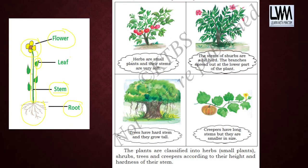Herbs are small plants. If you see this, it is a tomato plant — a tomato plant is a herb. The stems of herbs are very soft.